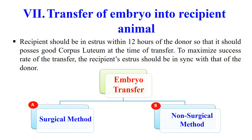The final step is the transfer of the embryo into the recipient animal. Once the embryo is collected and evaluated, the embryo at the proper stage is transferred to the recipient. The recipient should be in estrus within 12 hours of the donor so that it possesses a good corpus luteum at the time of transfer. To maximize success, the estrus cycle of the recipient should be synchronized with that of the donor animal.